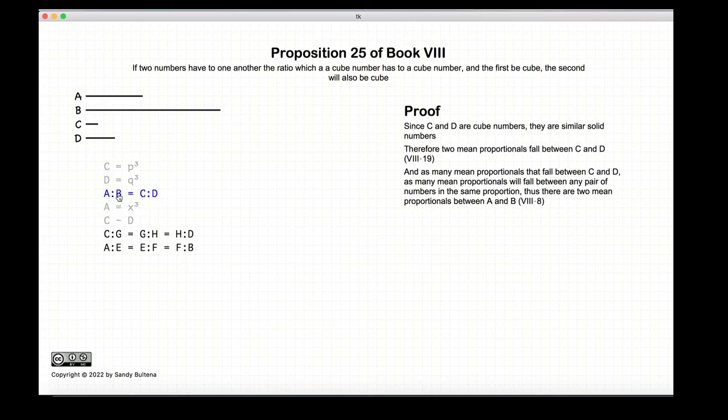Now A to B is equal to C to D. Since between C and D we have two mean proportionals, then between A and B we also have two mean proportionals, via Proposition 8 of this book.